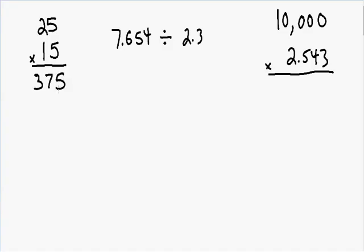Most of the time we'd be finished multiplying these two numbers, however your homework tells you that you need to round your answer using significant figures. So let's take a look at the numbers that we're multiplying together. We have the number 25, which has two significant figures, and we have the number 15, which also has two significant figures. When rounding, our final answer can never have more significant figures than any of the numbers we're multiplying. So since our numbers have two significant figures, then our final answer also must have two significant figures.